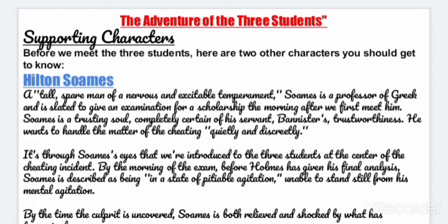Let's start with the characters. Before meeting the three students, let's meet the supporting characters. First is Hilton Soames, a tall, spare man of a nervous and excitable temperament. Soames is a professor of Greek and is slated to give an examination for a scholarship the morning after we first meet him. Soames is a trusting soul, completely certain of his servant Bannister's trustworthiness. He wants to handle the matter of the cheating quietly and discreetly. It's through Soames' eyes that we are introduced to the three students at the center of the cheating incident.